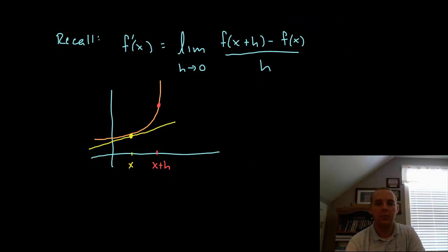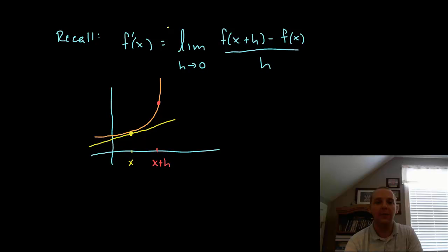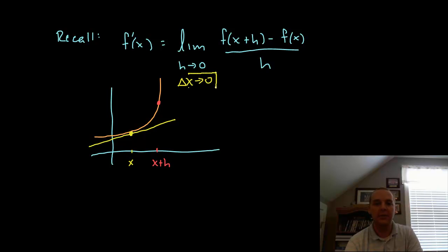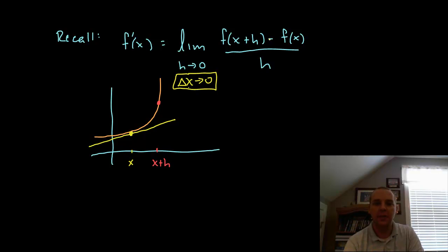A quick reminder of what the limit definition of a derivative is — it looks like this. It's the limit as h goes to zero — some textbooks use the notation delta x goes to zero, that's the same thing as the change in x — of f of x plus h, minus f of x, all over h.